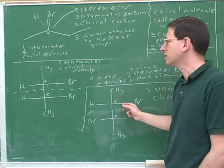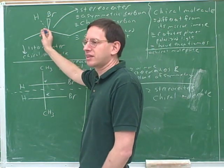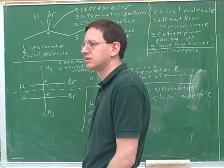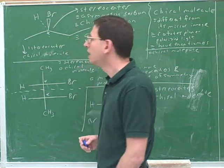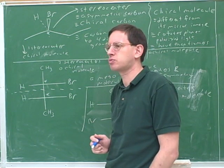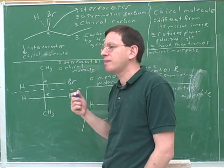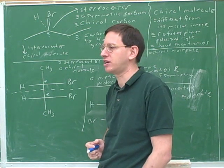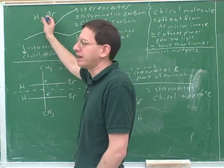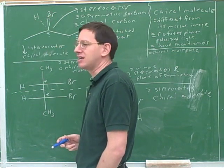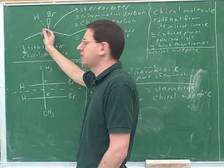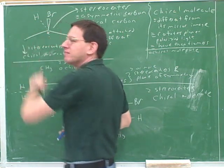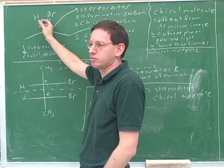Does this molecule have an enantiomer? Yes. The quickest way to draw the enantiomer is to draw the same molecule but switch the wedge and the dash — swap the hydrogen and the bromine. The reason that works is the single swap rule: any time you make a single swap, that always gives you the opposite configuration at a stereocenter. You could also swap the methyl and the ethyl, or the hydrogen and the methyl, but in most cases it's most convenient to swap what's on the wedge and what's on the dash.